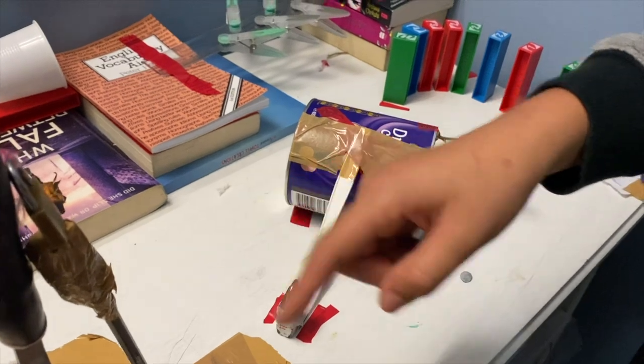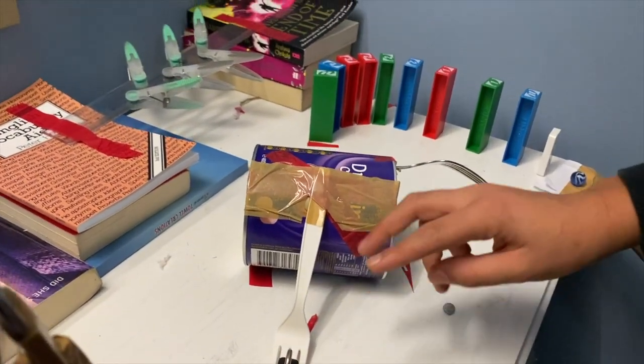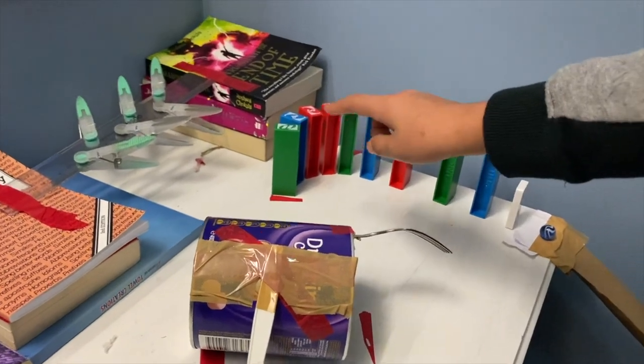This will cause it to hit this lock, which will fall over. Then this will spin and topple these dominoes over.